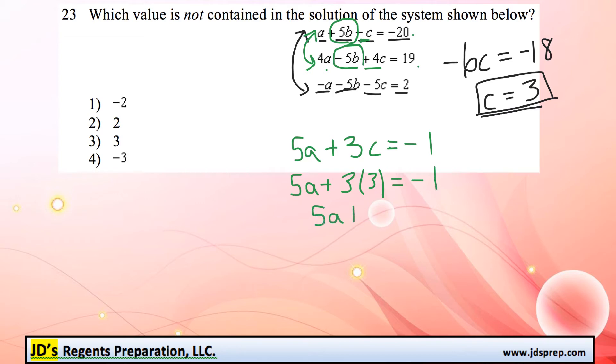And now we have an equation where we can solve for a pretty easily. So this is the same thing as 5a plus 9 equals negative 1. Then we're going to subtract 9 from both sides of the equation to get negative 10. Divide by 5 to get an a value of negative 2.